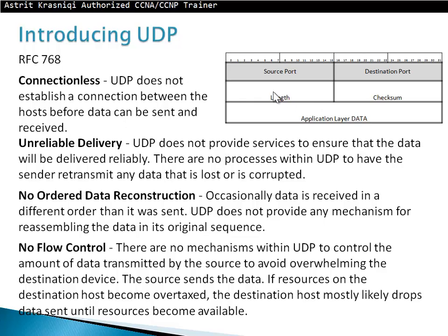The UDP header is notably simpler, with far fewer fields than the TCP header. It contains a source port, destination port, length, checksum, and then the application layer data.